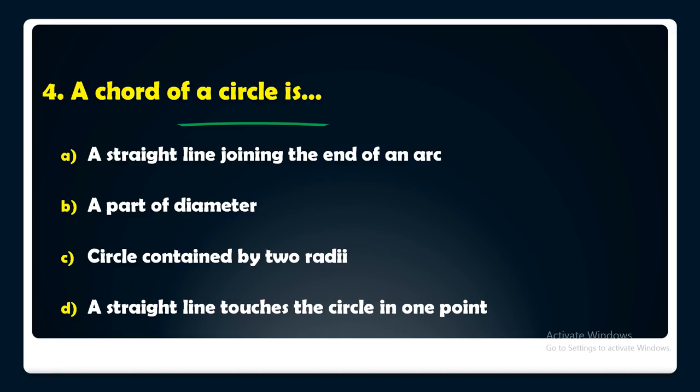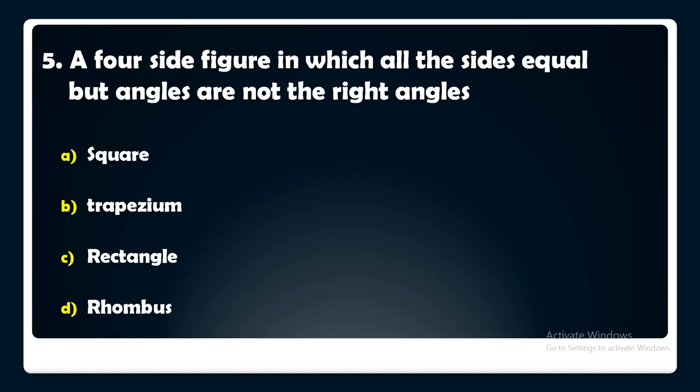A four-sided figure in which all the sides are equal but angles are not right angles — square, trapezium, rectangle, or rhombus. The answer is: a four-sided figure in which all the sides are equal but angles are not right angles is a rhombus.